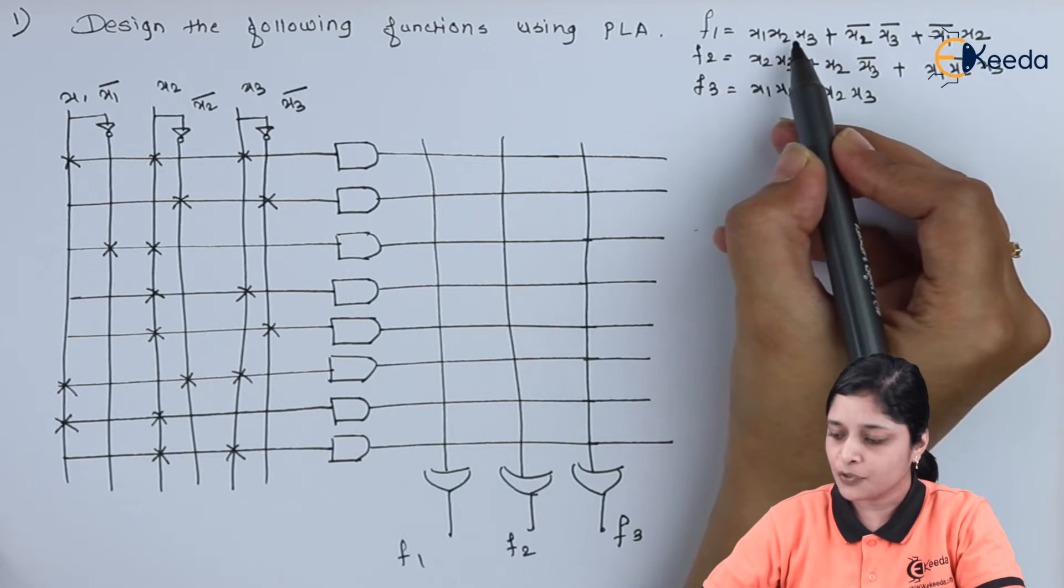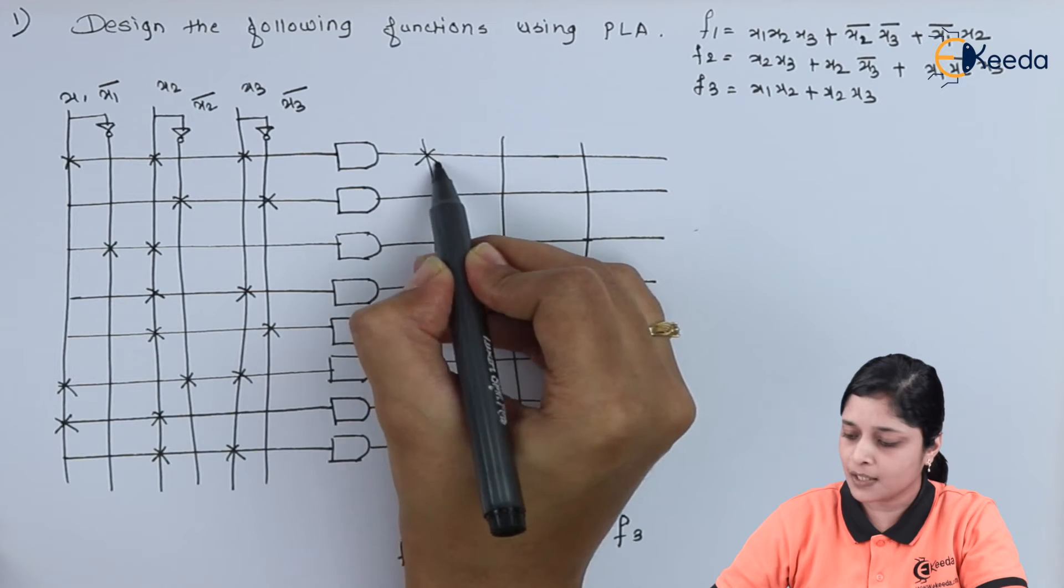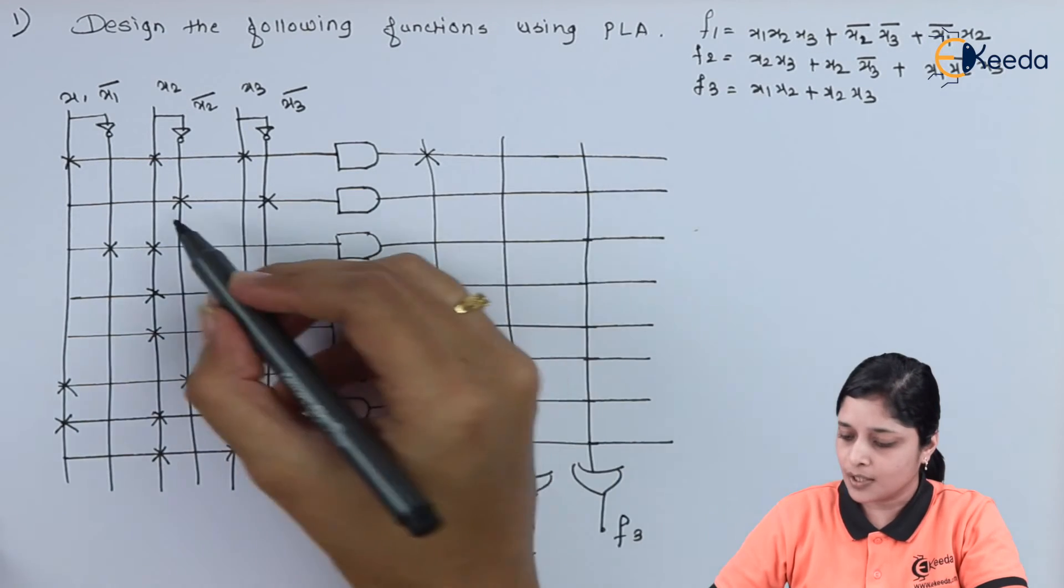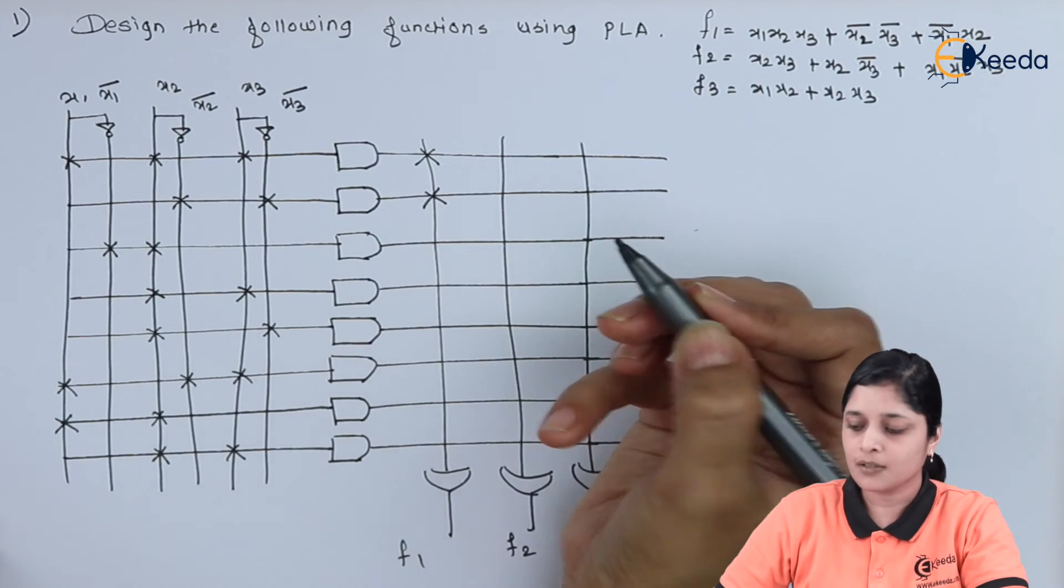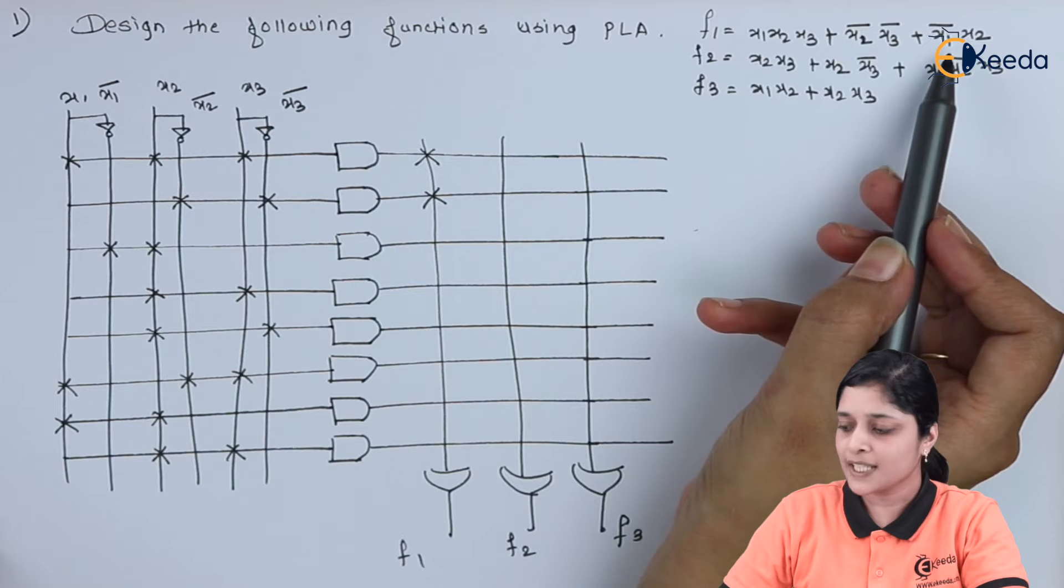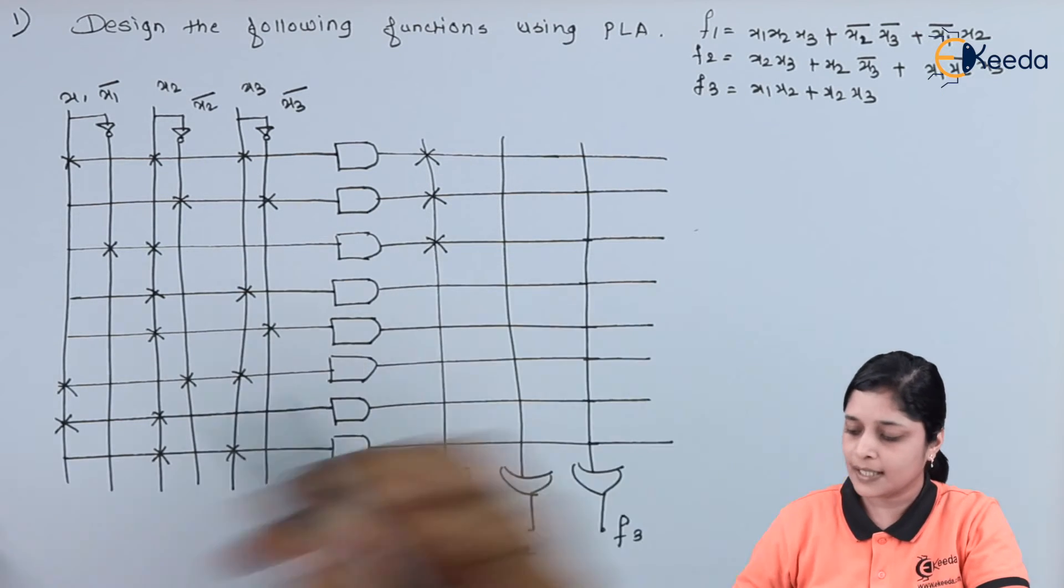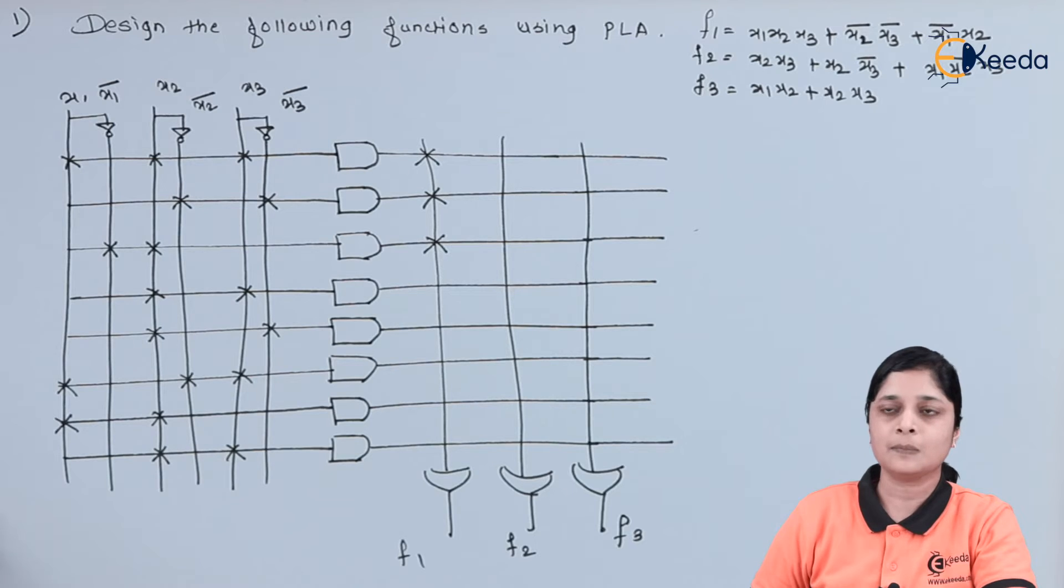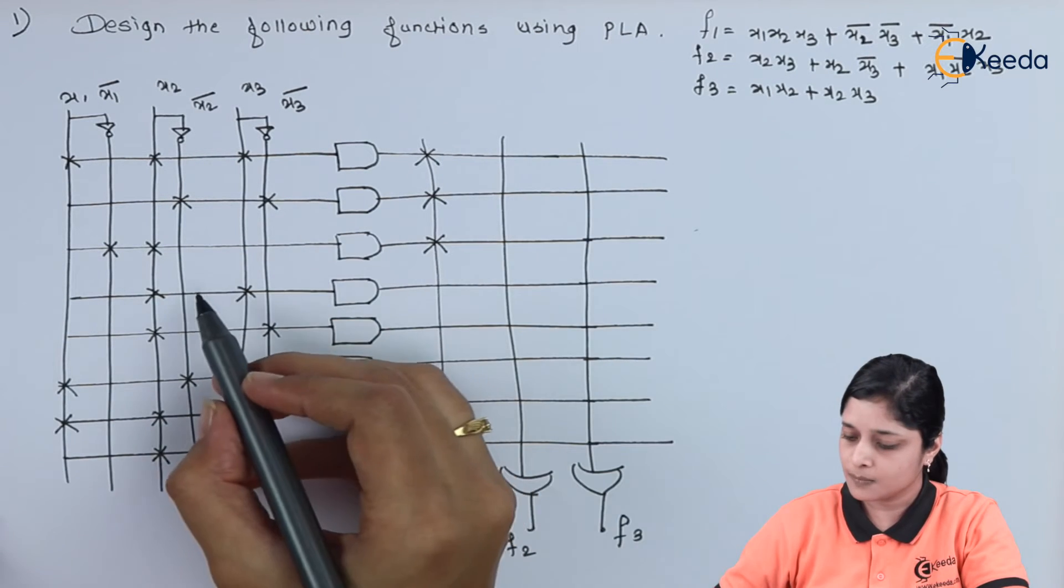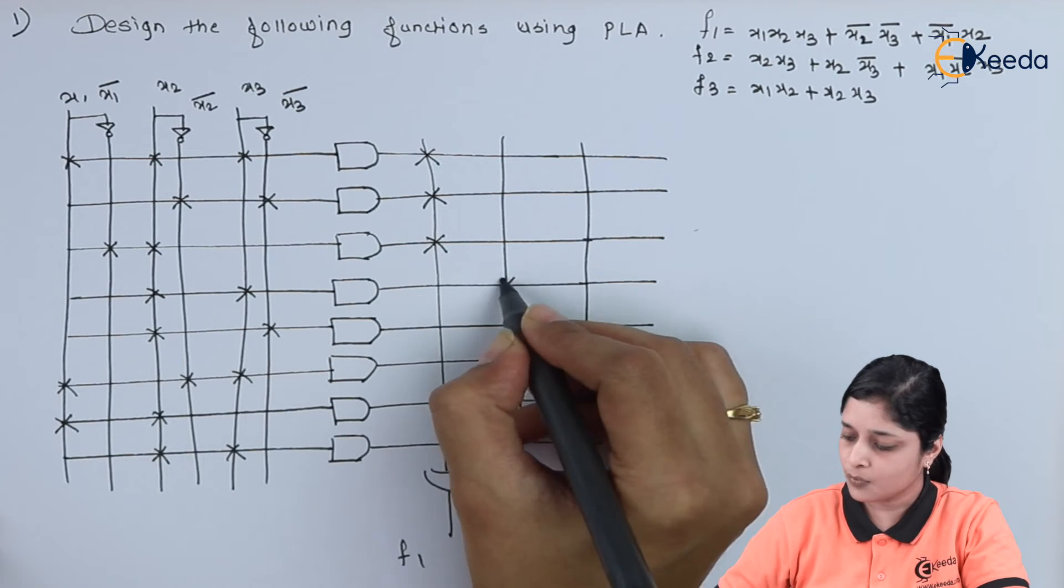Now, for F1, you have X1, X2, X3. Means this output. So, you can make here cross. Then, X2 bar, X3 bar. Again, we will make a cross for F1. And the third term for F1 is X1 bar, X2. So, we will write here like this. After that, you have X2, X3. This is your X2 and next is your X3. So, we want this.